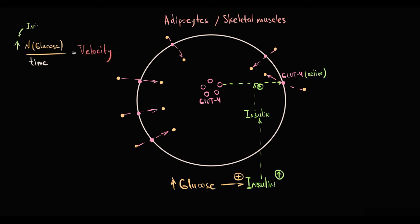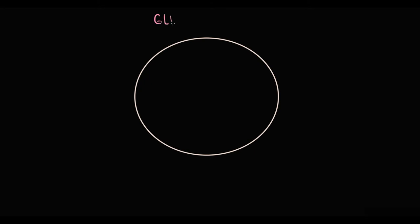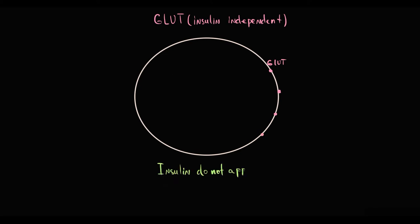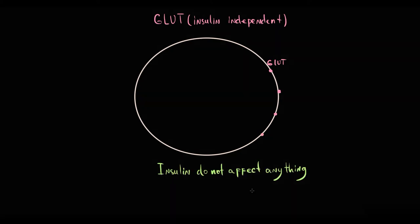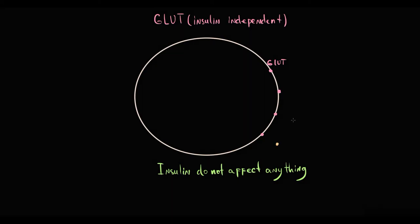Insulin increases the maximal velocity of glucose transportation, which is Vmax, and increasing Vmax results in increasing glucose uptake into the cell. In contrast, insulin-independent glucose transporters — GLUT 1, 2, 3, and 5 — are always present on the cell membrane, so insulin does not affect the velocity of their glucose transportation. Because they are always localized on the membrane, they constitutively transport glucose in an insulin-independent manner.